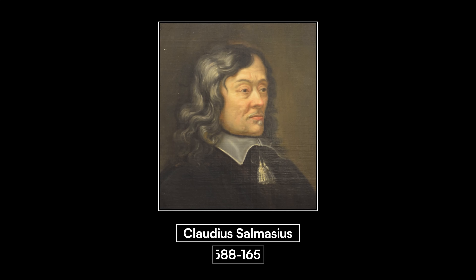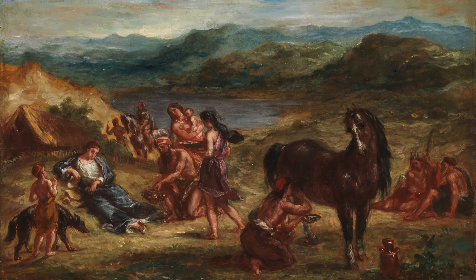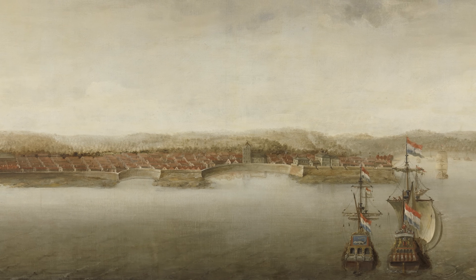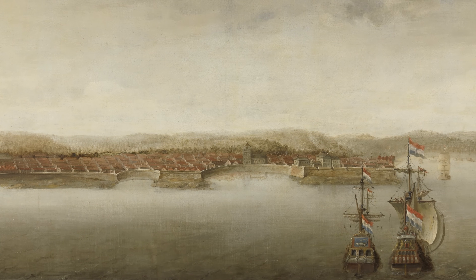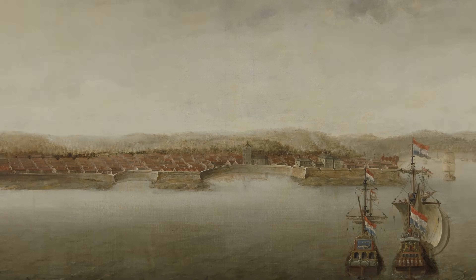Claudius Salmasius, who Van Boxhorn had originally described his Scythian theory to, also notably later included Sanskrit in the Scythian family. The Scythian theory became widely known to other scholars, so much so that in 1733, Teodor Walter, a missionary in Malabar, recognised similarities between Sanskrit, Greek, and Persian numerals, and explained his observations with the Scythian theory.